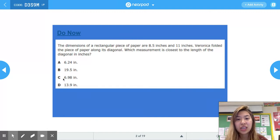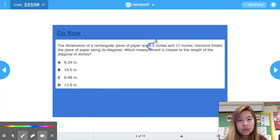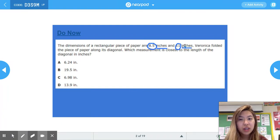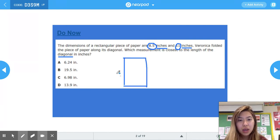Aruna reads: the dimensions of a rectangular piece of paper are 8.5 inches and 11 inches. Veronica folded the piece of paper along its diagonal. Which measurement is closest to the length of the diagonal in inches? If we drew out the piece of paper and said that this was the side that was 11 inches and this is the side that was 8.5, and we drew a diagonal line...